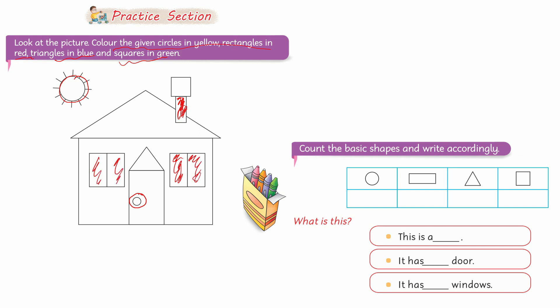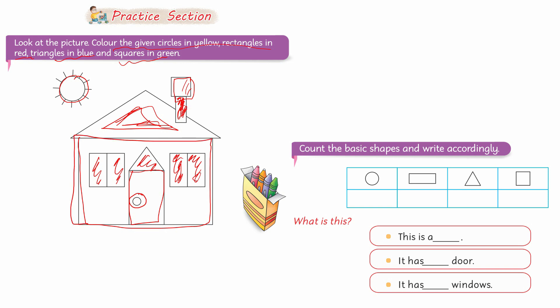The triangle with three sides and three corners — color it blue. The square — color it green. If you look at the rectangle shape in this picture, it is a rectangle. If you look at the whole house, this is a rectangle shape.